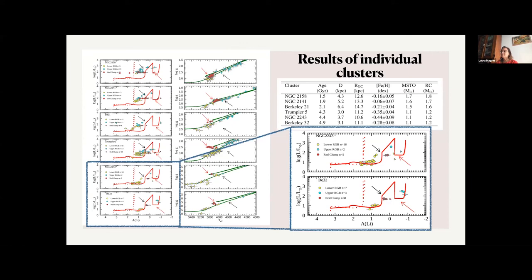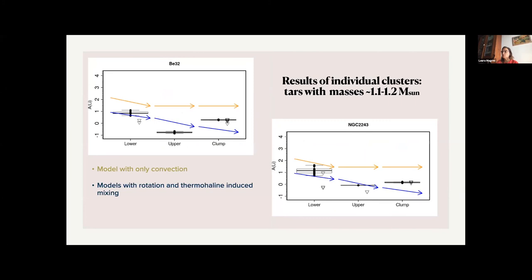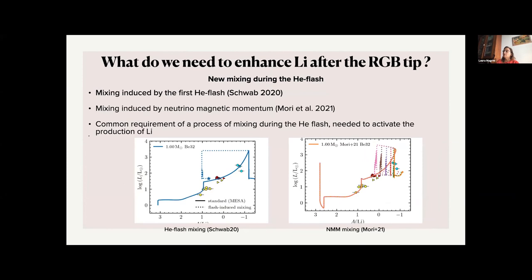But the clump is somehow enhanced in lithium. Another way to see this effect is here. We have the average abundances in each phase compared with the model. And again, the orange is the model with convection. The blue is the model with thermohaline mixing and rotation. And we see that the clump is slightly enriched, both especially in lower mass stars. So while for more massive stars, the effect is lower.